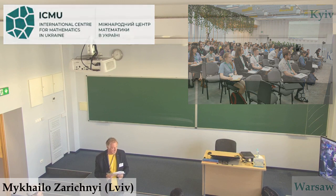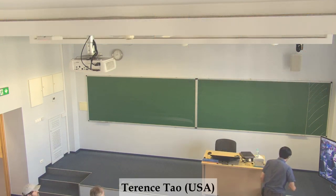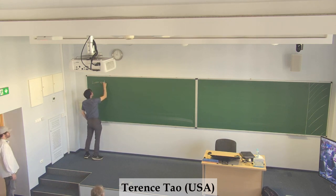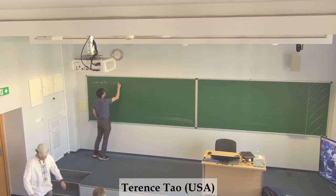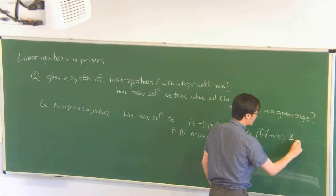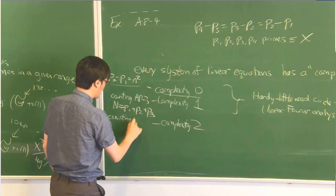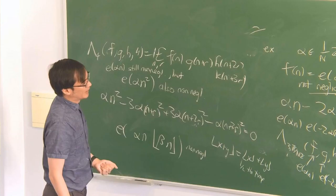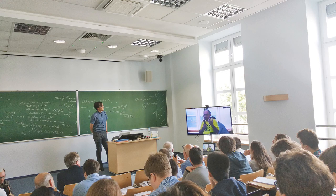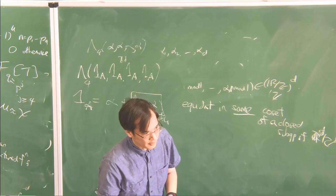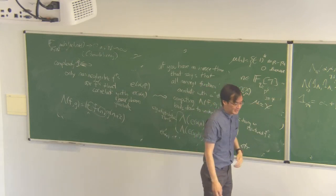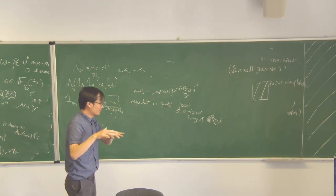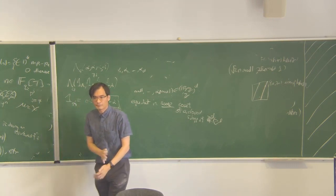This talk is about the following question: given a system of linear equations with integer coefficients involving some number of unknowns, how many solutions are there? There are still basic questions and ongoing research in that area — in particular, work to bring the theory of higher-order equations to the same level as linear equations.